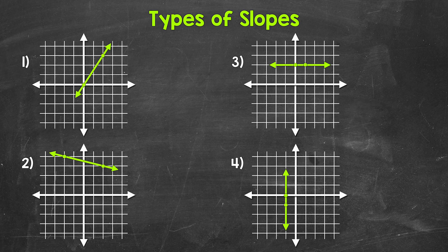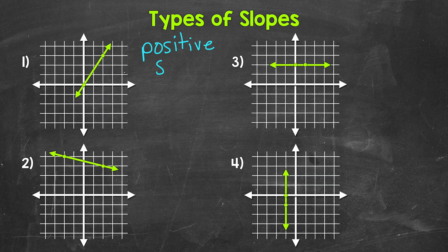Let's jump into number one, where we have a line moving upward as it's moving from left to right. So there is positive vertical change from left to right. This line is moving upward — the Y values are increasing as the X values are increasing. This is an example of a positive slope, our first type of slope.